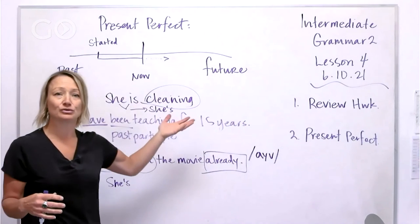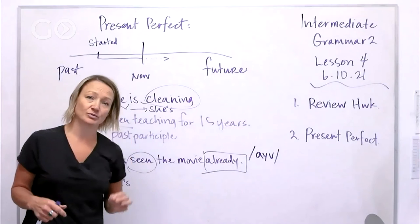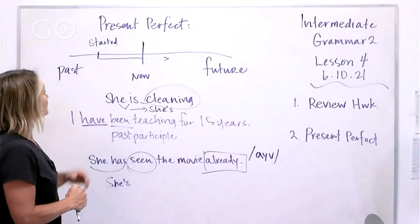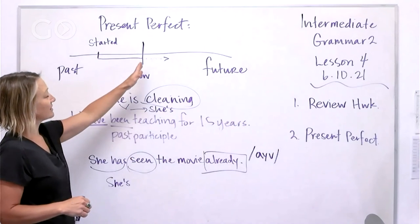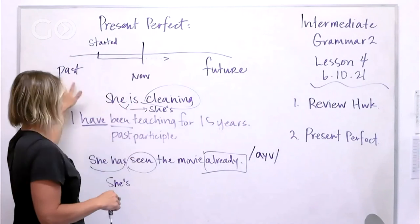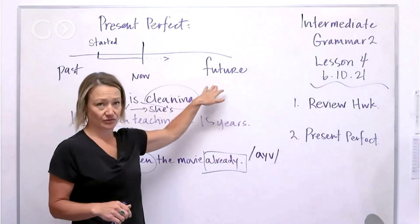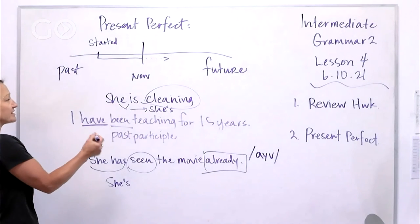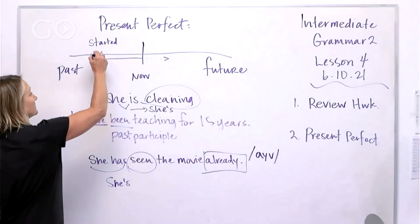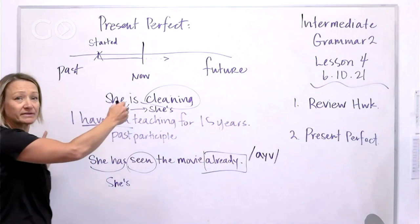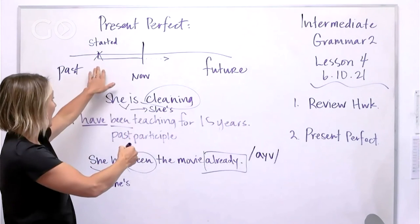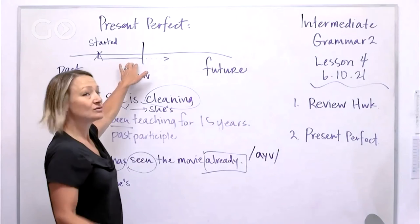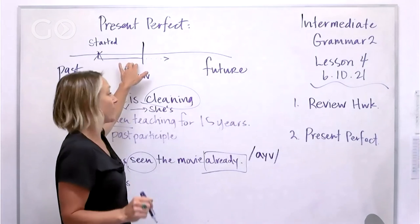So let's go back. When do we use this tense? The present perfect is... here's our timeline. We've got the past, the present, and the future. We use this tense when we talk about something that started happening in the past and continues to now, and maybe even will continue into the future.